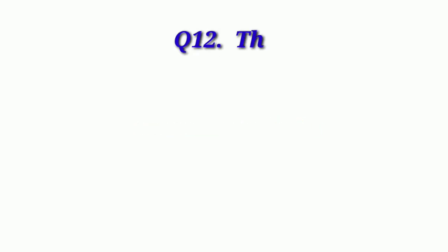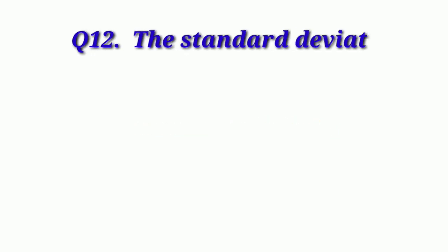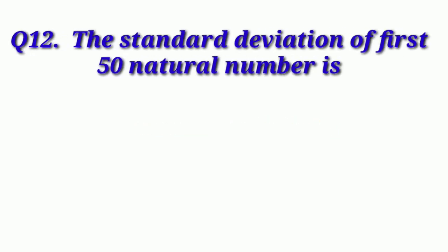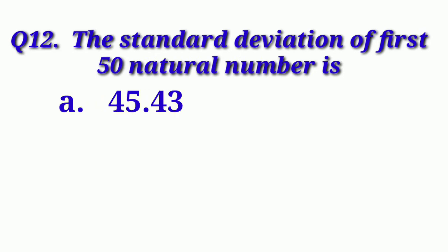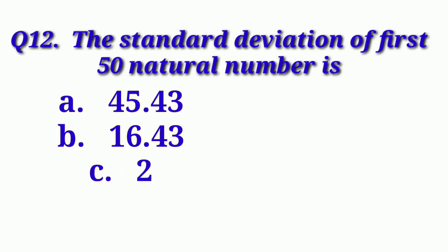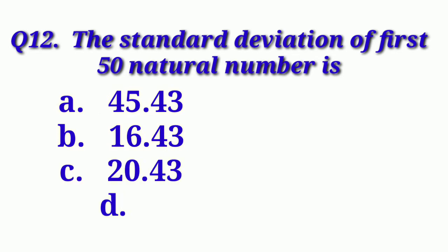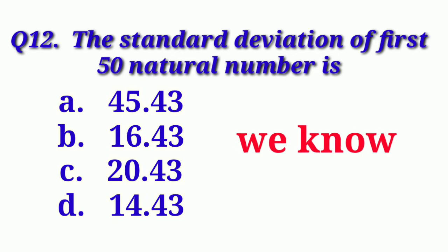Our next question is: The standard deviation of the first 50 natural numbers is. Option A: 45.43. Option B: 16.43. Option C: 20.43. And Option D: 14.43. We know the standard deviation of the first n natural numbers is SD = √((n² − 1) / 12). Here n = 50.